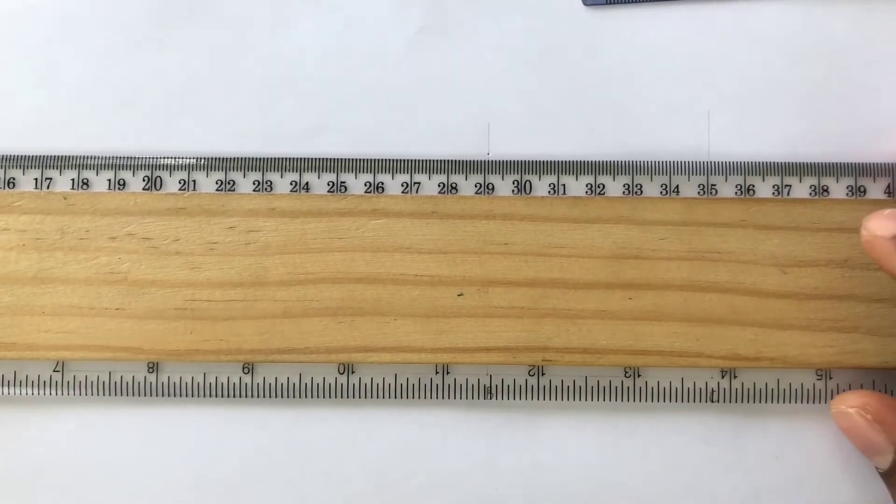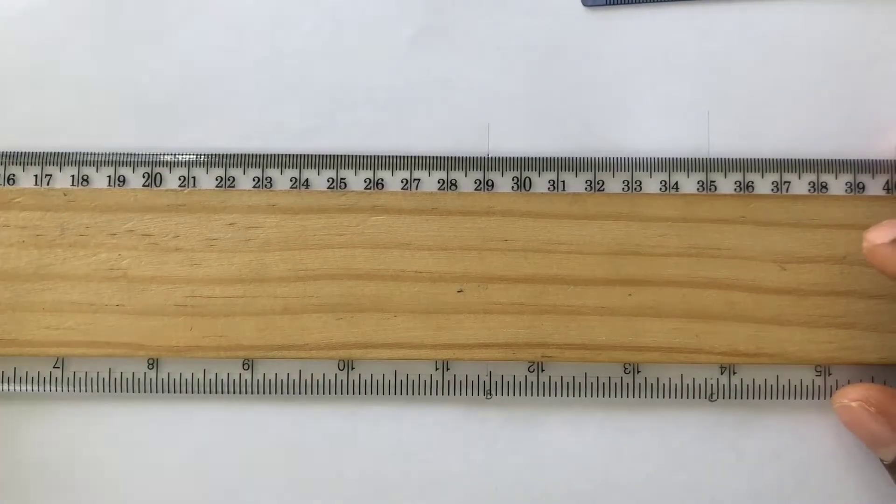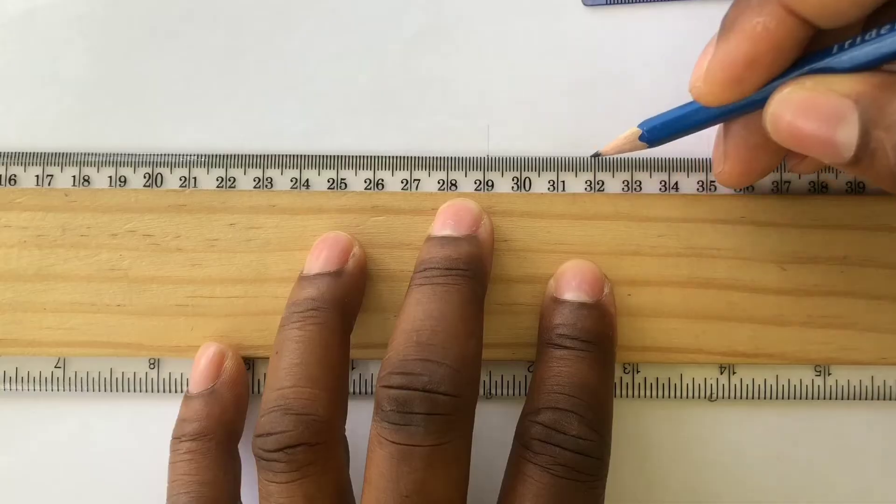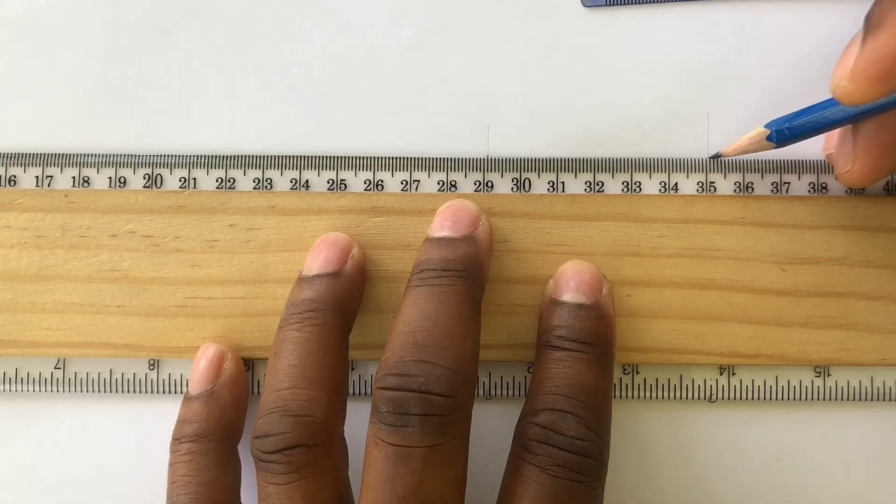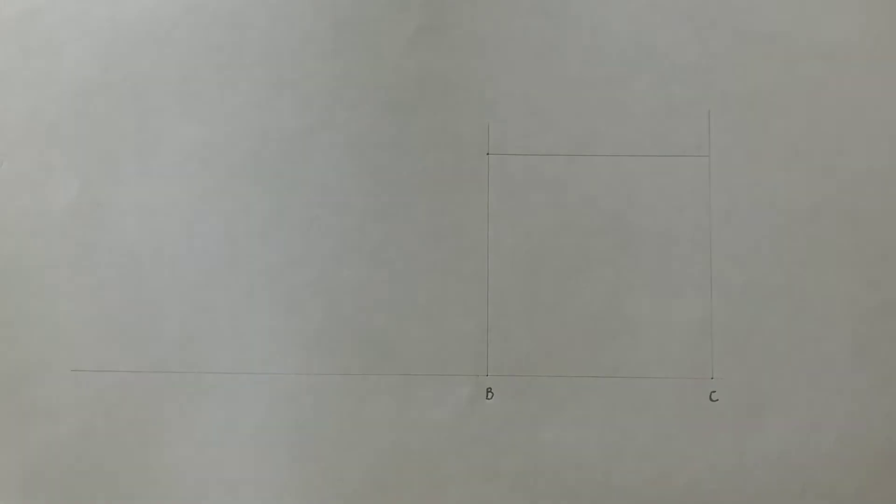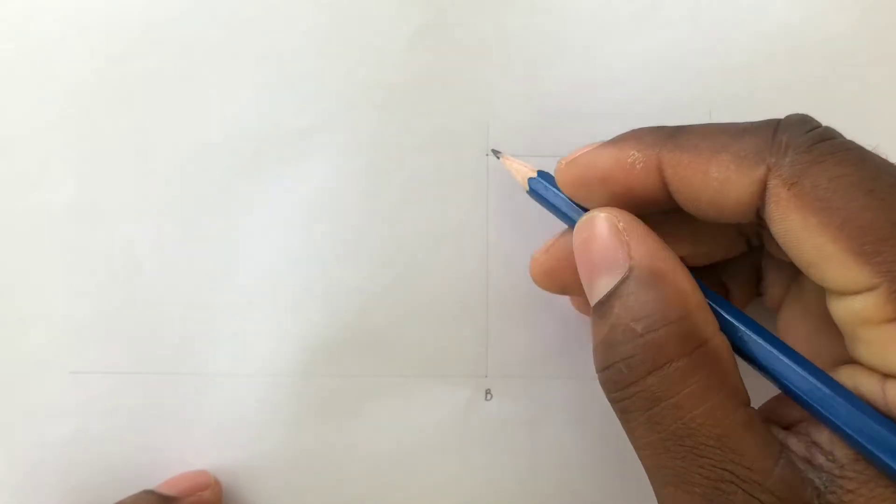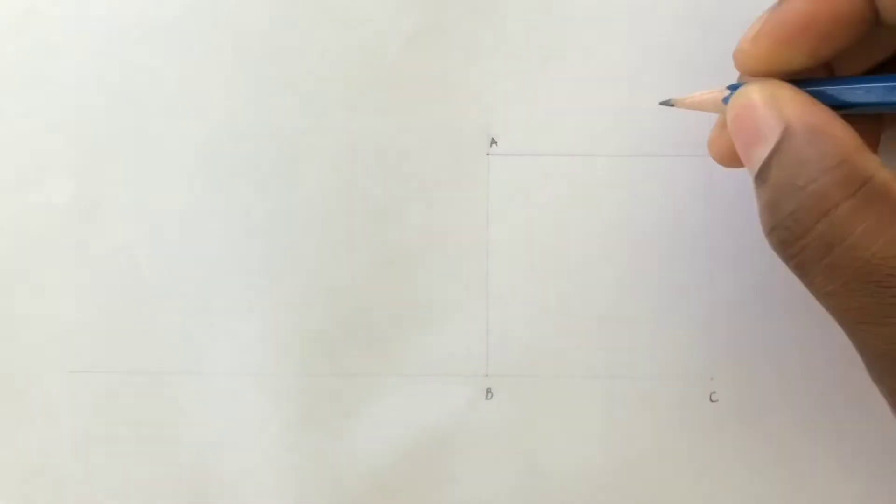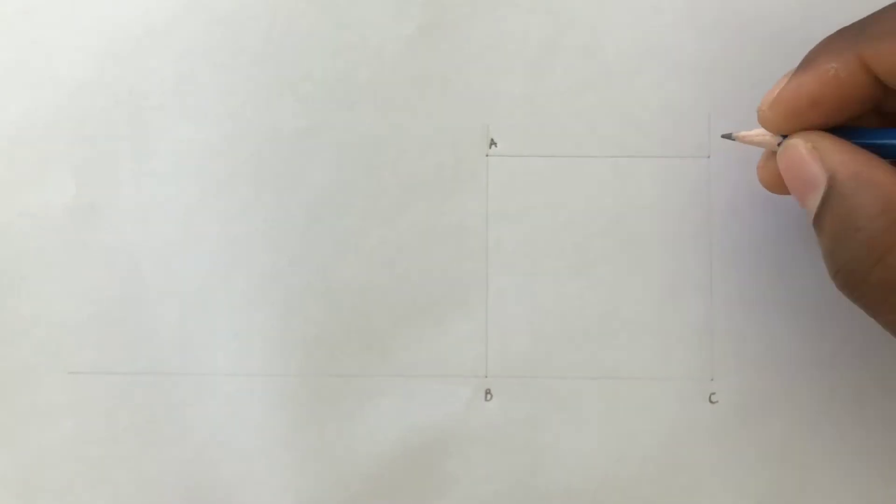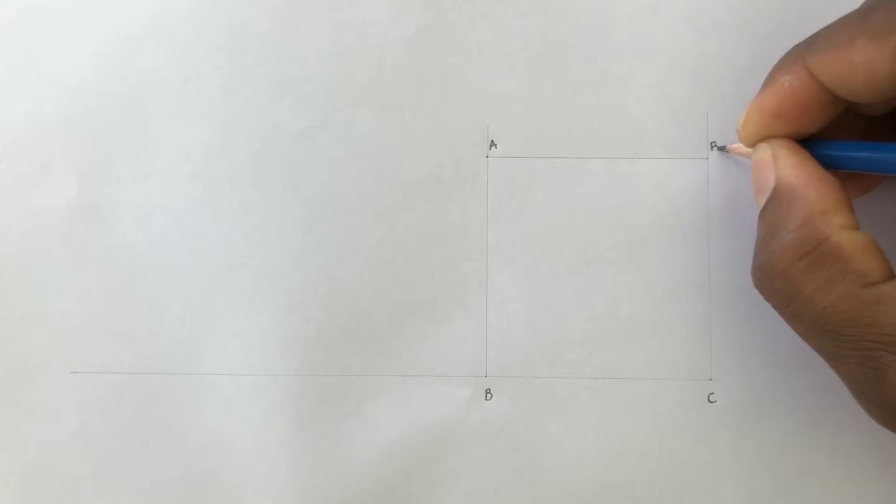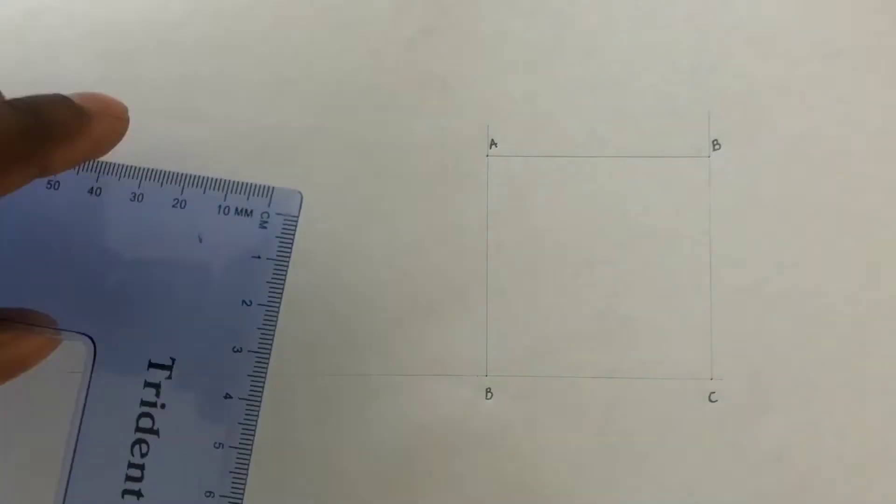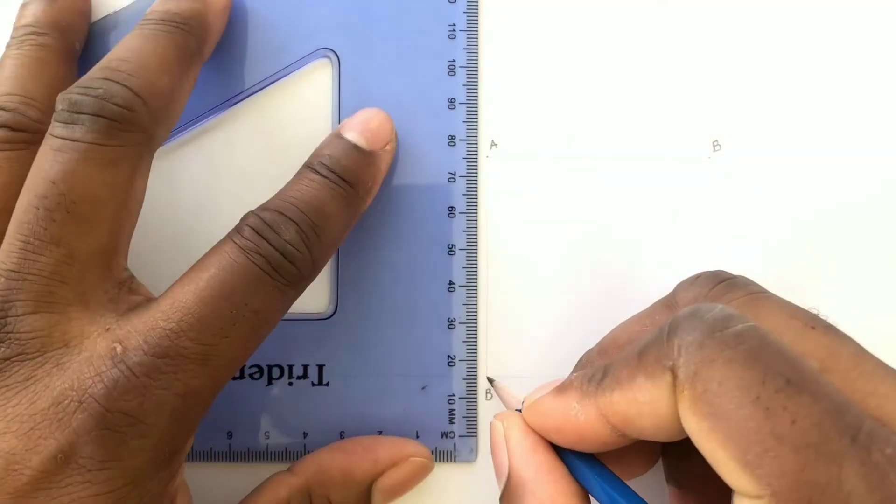Use your T-square to draw a horizontal line from the point you identified to touch the other line at the right. This will give us our required square. Label point A. Outline your required square.